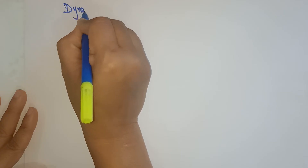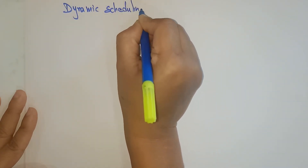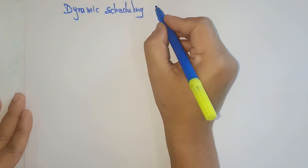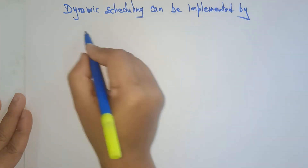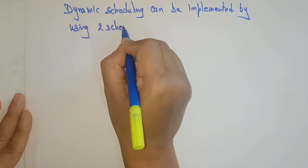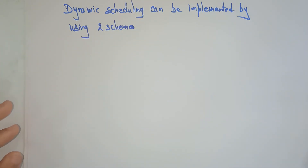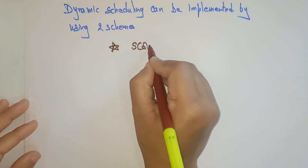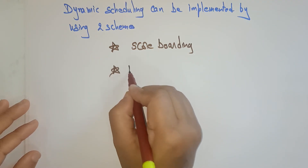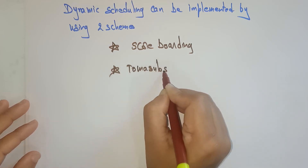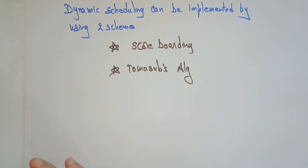Dynamic scheduling can be implemented using two schemes. The first is scoreboarding, and the second is Tomasulo's algorithm. These are the two techniques used to implement dynamic scheduling.